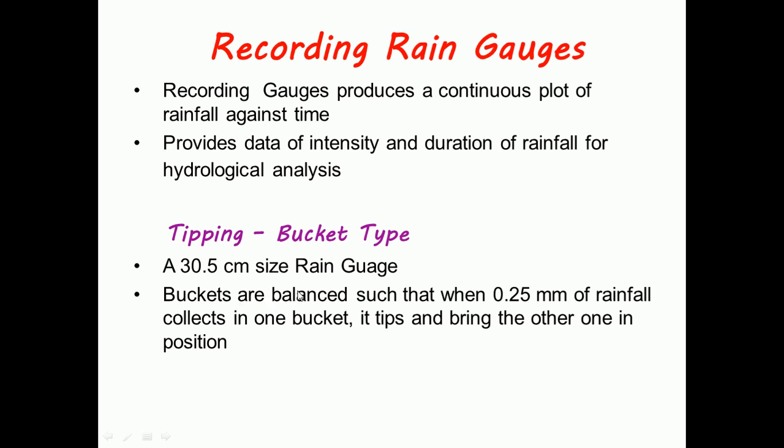Two buckets are used and balanced such that when 0.25mm of rainfall collects in one bucket, it tips and brings the other one in position. This gives a continuous plot of rainfall against time.